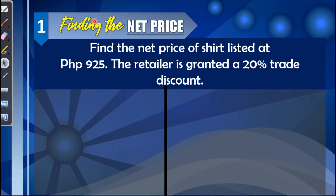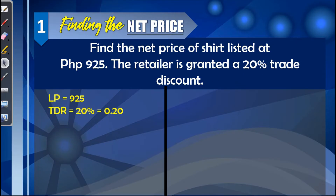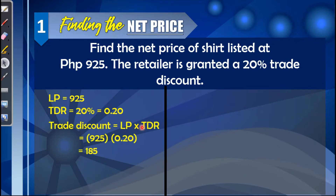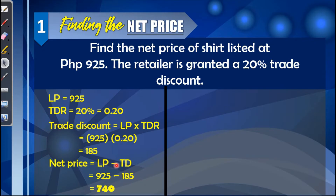First example — finding the net price. Find the net price of a shirt listed at 925 pesos, given that the retailer is granted a 20% trade discount. Using the discount method, identify the given values: list price is 925 pesos, and the trade discount rate is 20% or 0.20. Step one, find the trade discount: 925 × 0.20 = 185. Step two, find the net price: 925 − 185 = 740.